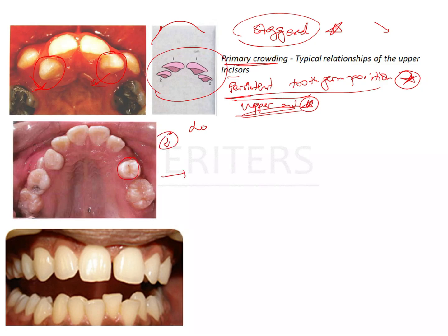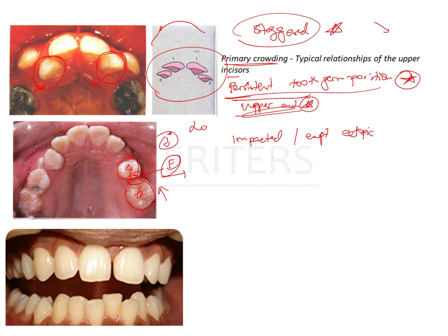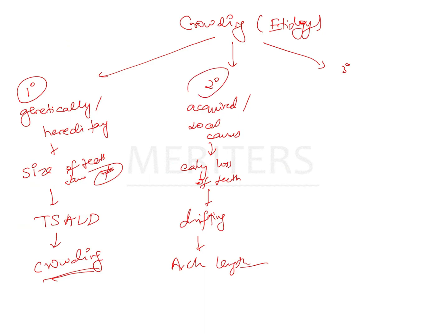For example, there is a first premolar (tooth 4) and a first molar (tooth 6). Due to early loss of tooth 'e' with no space maintainer given, tooth 6 has drifted anteriorly and occupied the place where tooth 5 would have erupted. Now tooth 5 has no space and will either be impacted or erupt in an ectopic position, bringing about crowding — this is secondary crowding.